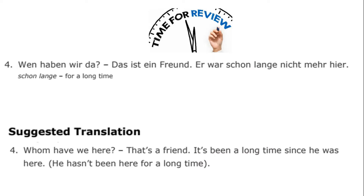The fourth sentence: 'Wen haben wir da? Das ist dein Freund. Er war schon lange nicht mehr hier.' We already know 'wen' means 'whom' rather than 'who' — it's the object rather than the subject, confirmed because 'haben' is first-person plural. So 'what do we have here?' is the colloquial English translation — 'da' means 'there,' which is why 'dasein' is the being-that-is-there. 'Das ist dein Freund' functions like saying 'Oh, this is Chad, right?' This is someone who was not here for a long time — 'er war schon lange nicht mehr hier' — that's why we notice it and ask who we have here.